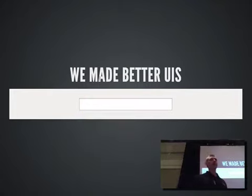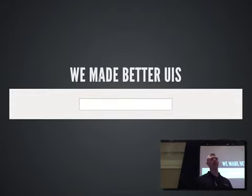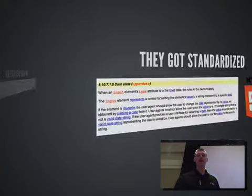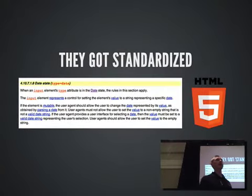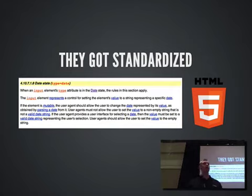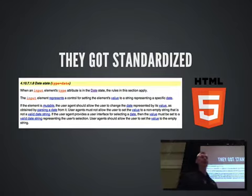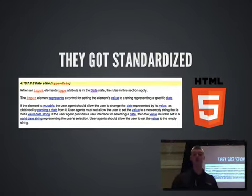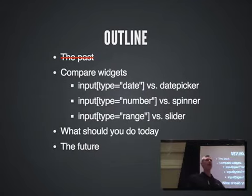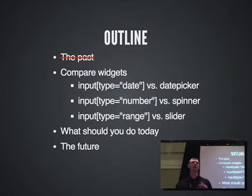jQuery UI is seven or eight years old at this point, with precursors as well. Eventually the standards came around, and several years ago a number of new input types — including the date type in particular — were added to the specification. Then in the last handful of years, browsers have actually started to implement these controls. We're kind of in the middle stage where browsers are still implementing these and it's still in a state of flux.